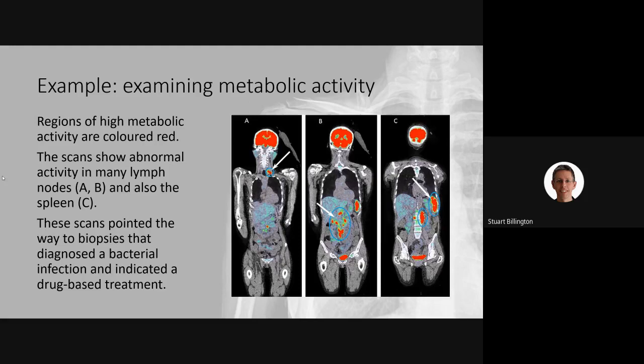A further key difference is that X-rays and CT scans tend to image passively without capturing changes within the body, whereas tracer technology focuses on metabolic pathways and real-time processes - what's called functional scanning. You can actually see processes taking place within the patient in real time as the radioactive tracer flows through the body and emissions arrive from active areas.